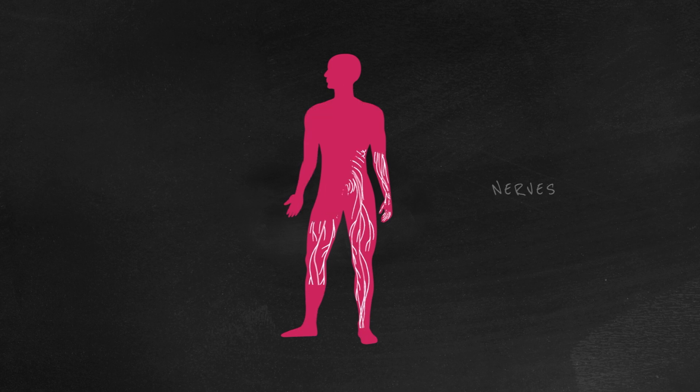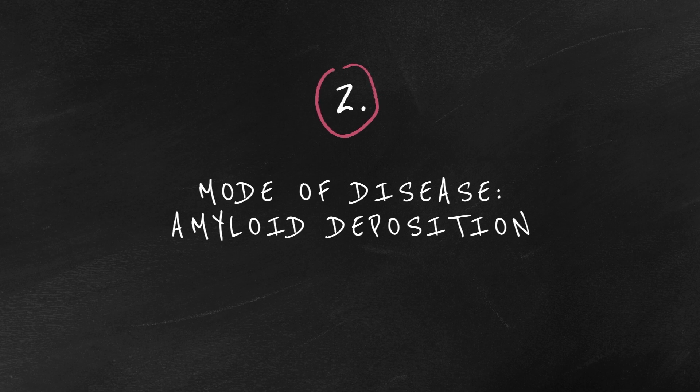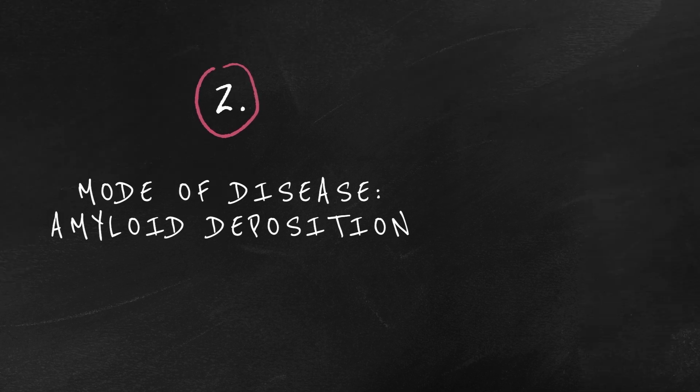Other organs can also be impacted by the disease, including the kidneys. To understand this disease a little better, let's look at what a good TTR protein does.